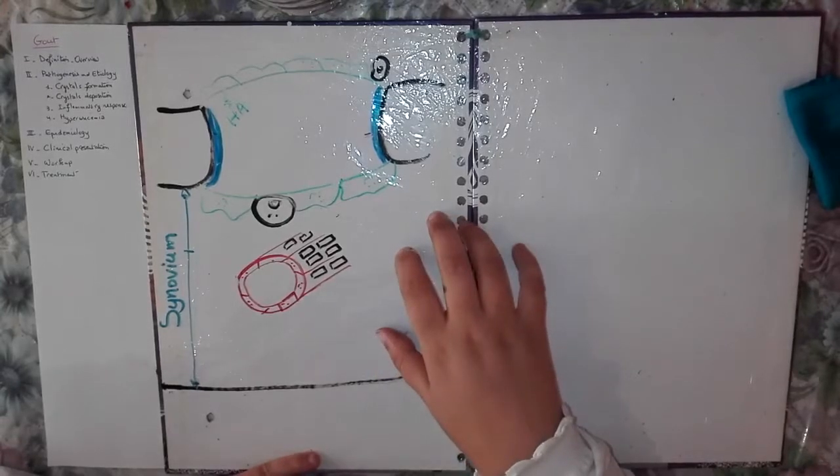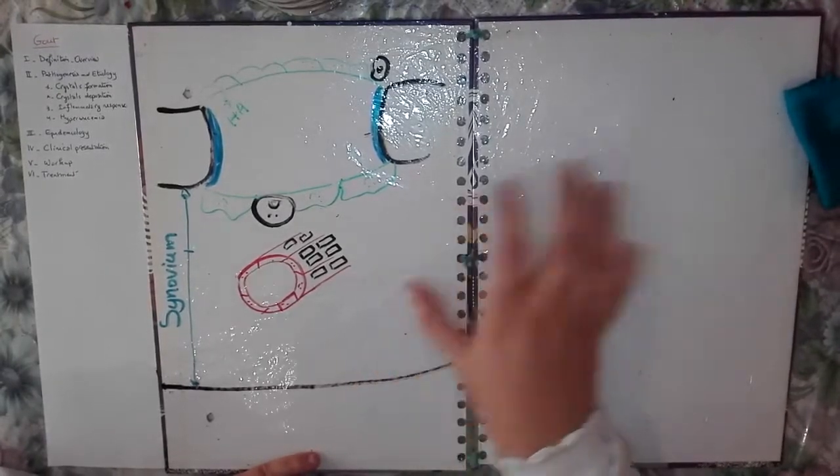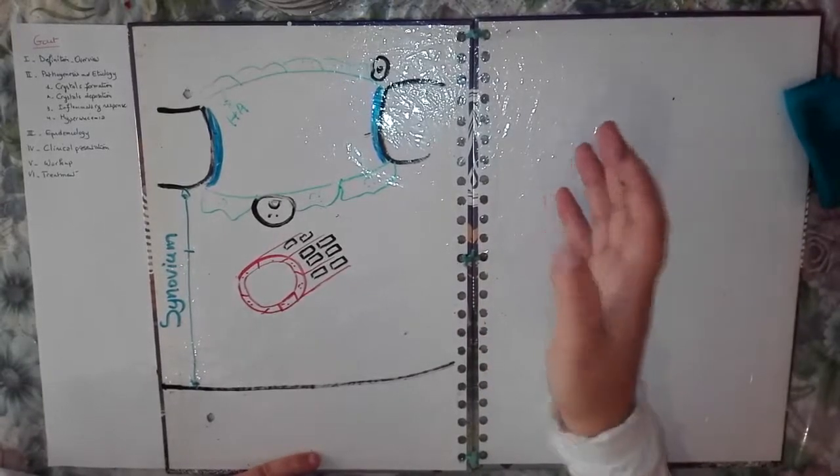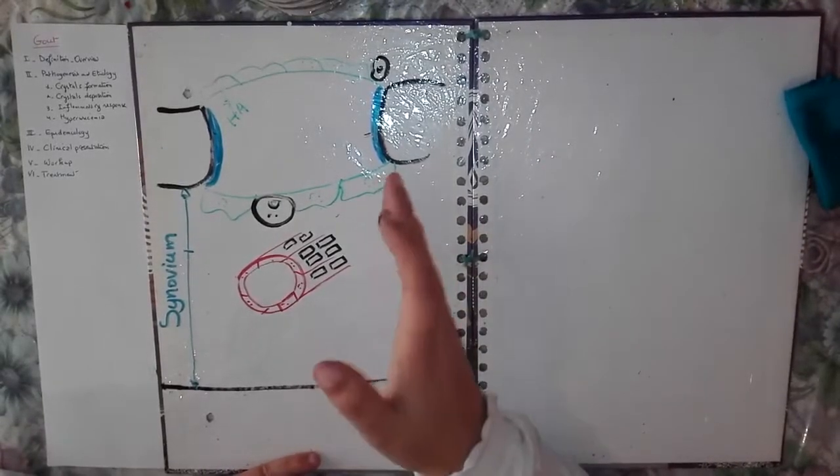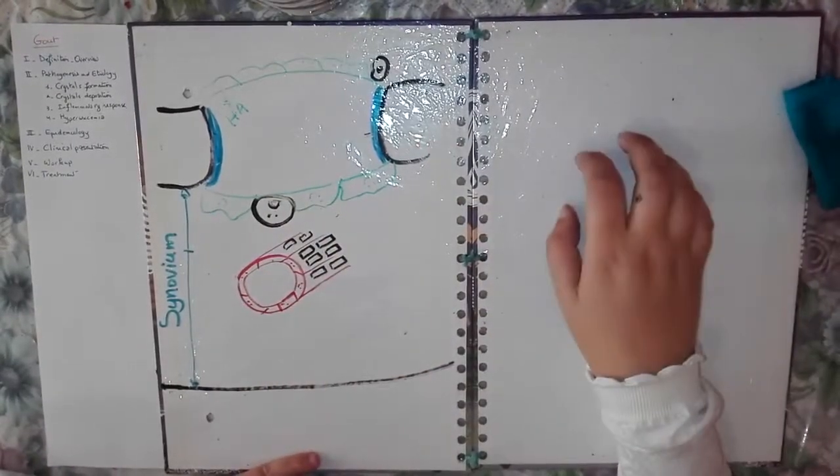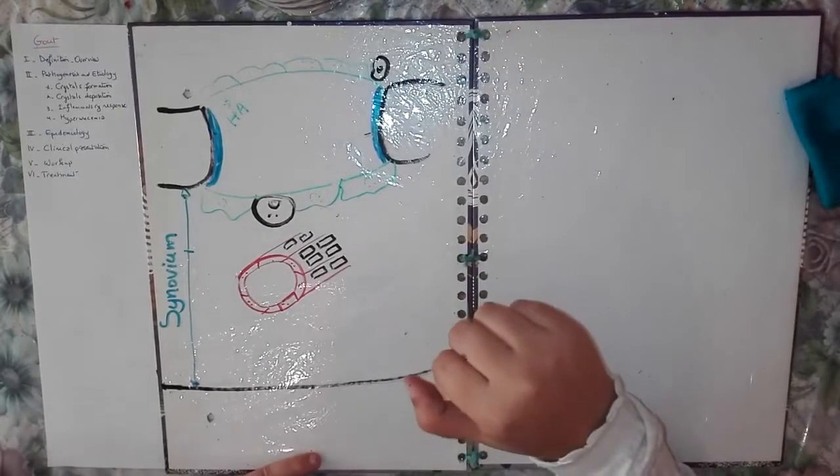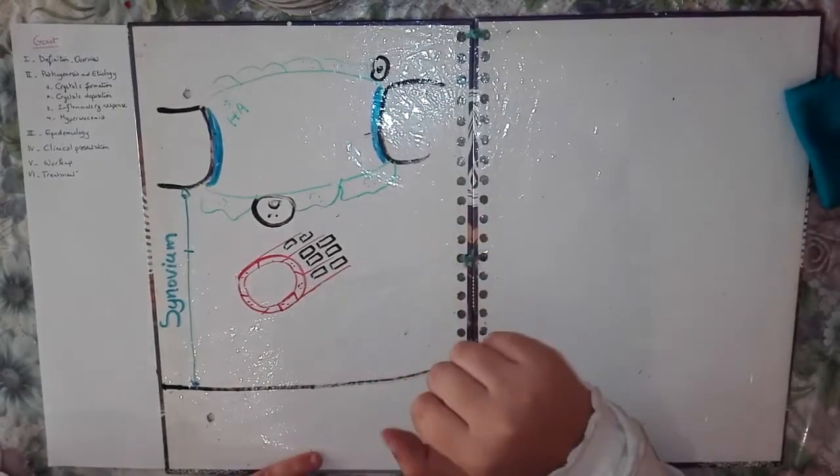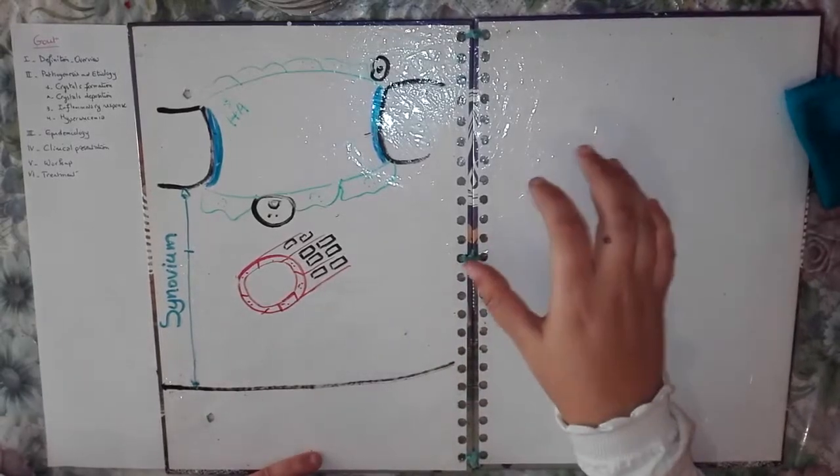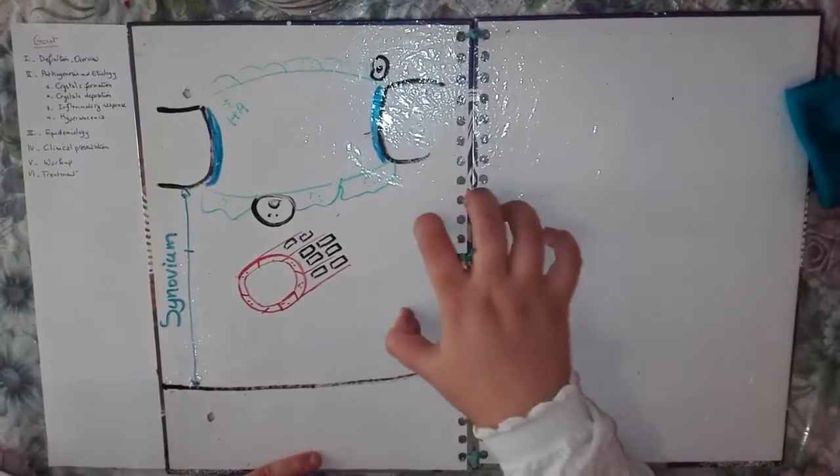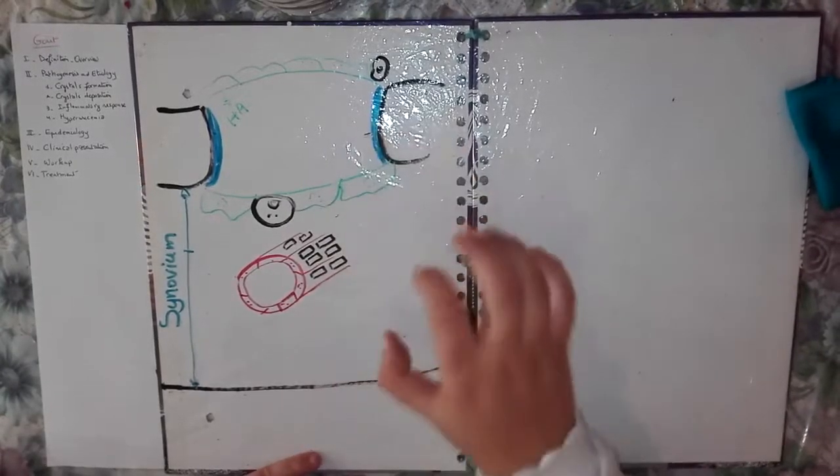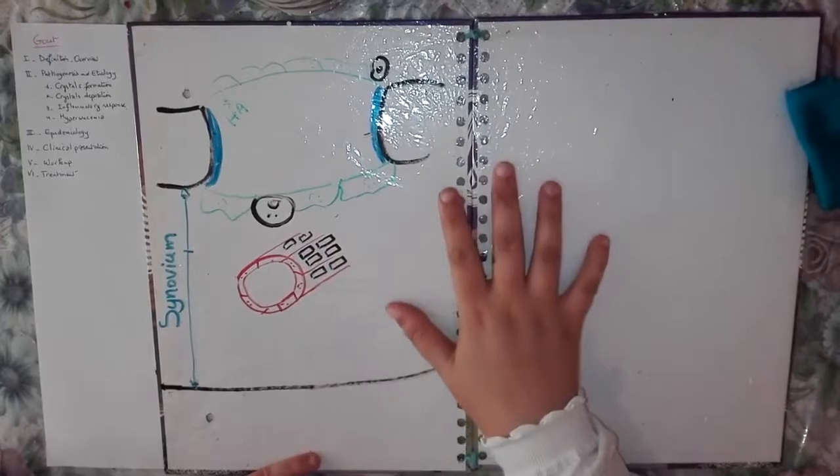Uric acid is within the blood. The blood circulates everywhere in the body. Why? Crystals will be deposited within the joint particularly. Why? It's not somewhere else. This is what we're going to see right away. It must be some factors, some conditions that make the joint the place where crystals are going to be deposited.